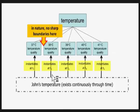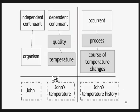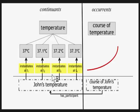This is of course a matter of continuous change, so the diagram is simplified — there wasn't space to include all the temperature qualities that would fill the gaps between those visible. John's temperature history is the course of John's temperature, and a medical chart of John's rising temperature over a short interval would be a representation of a segment of the course of John's temperature over a period within John's life.